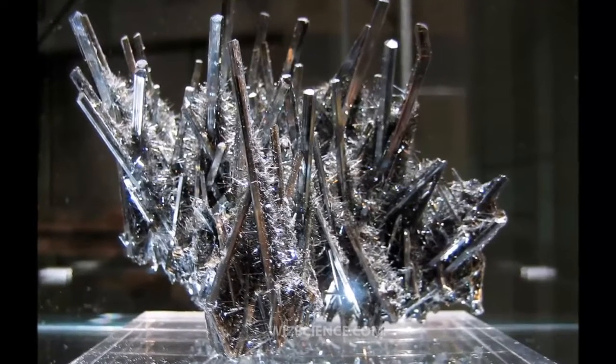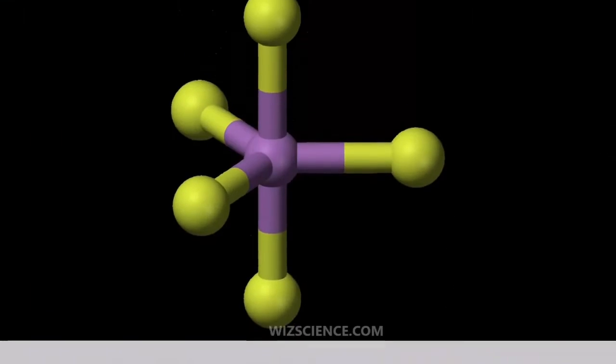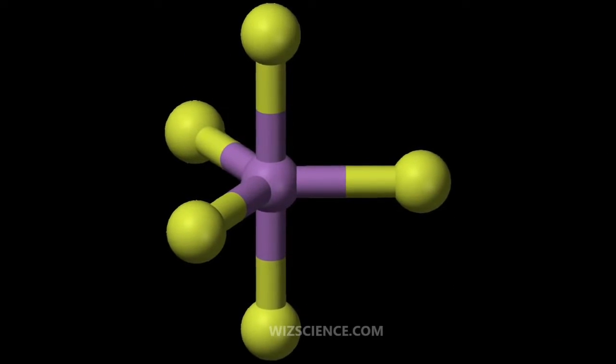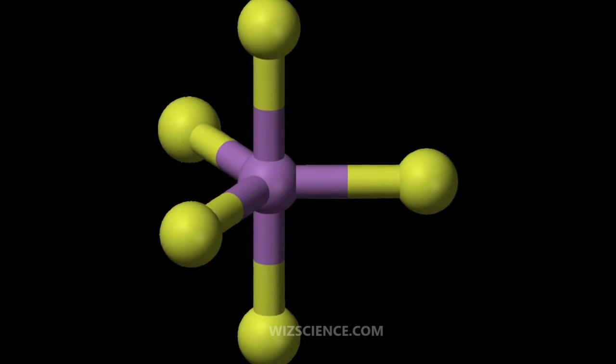Antimony is a chemical element with symbol Sb and atomic number 51, a lustrous gray metalloid. It is found in nature mainly as the sulfide mineral stibnite.